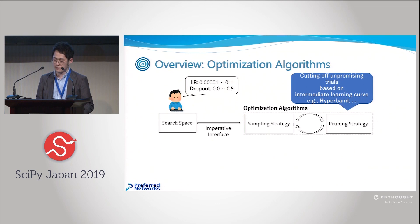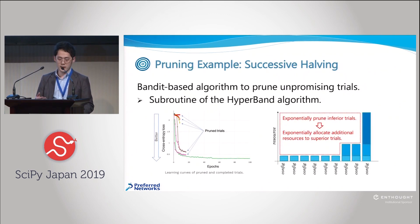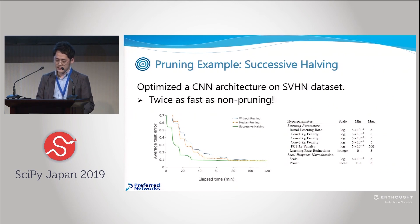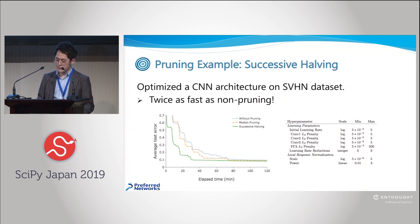The pruning strategy automatically stops underperforming trials by looking at intermediate learning curves — essentially early stopping. Optuna provides multiple pruning methods and you can write your own logic as well. Among them, successive halving — based on multi-armed bandit — showed outstanding performance. By using successive halving, it makes your optimization approximately twice as fast, so just by turning on this feature you can make your optimization much, much faster.